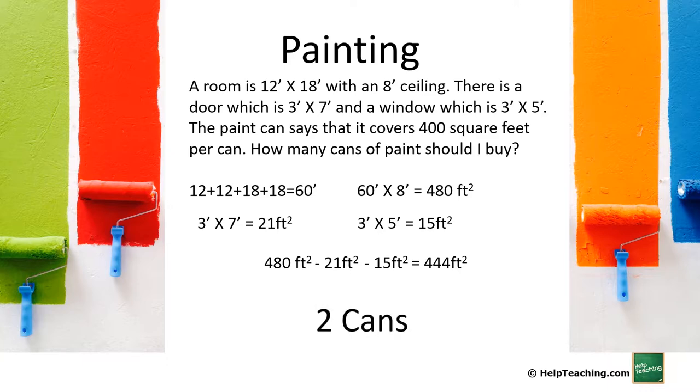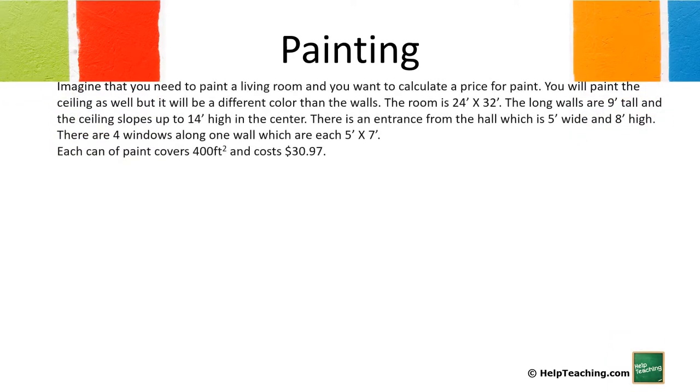Okay another painting example. Imagine that you need to paint a living room and you want to calculate a price for paint. You will paint the ceiling as well but it will be a different color than the walls. The room is 24 feet by 32 feet. The long walls are 9 feet tall and the ceiling slopes up to 14 feet high in the center. There is an entrance from the hall which is 5 feet wide and 8 feet high and there are 4 windows along one wall which are each 5 feet by 7 feet. Each can of paint covers 400 square feet and costs $30.97.